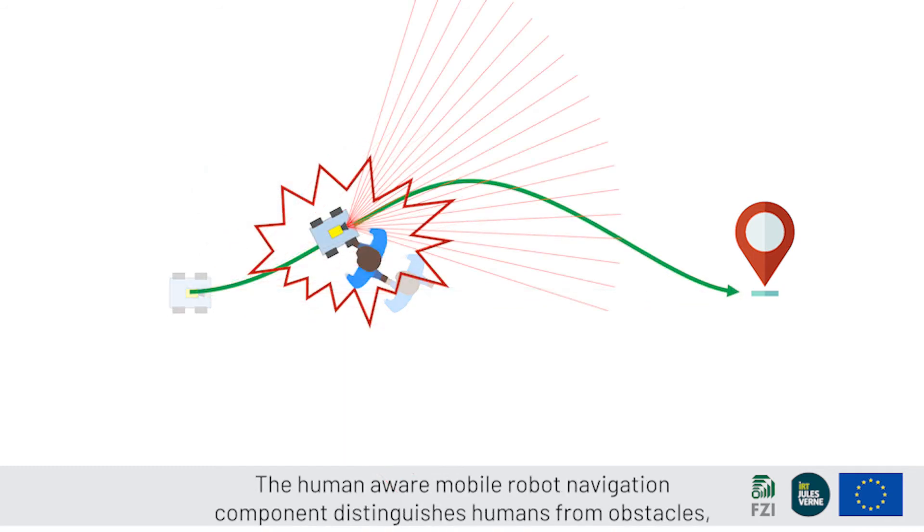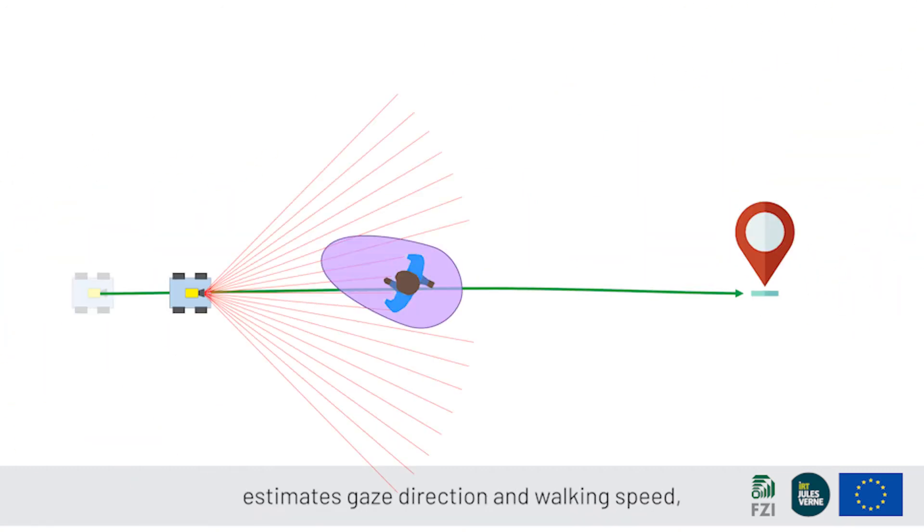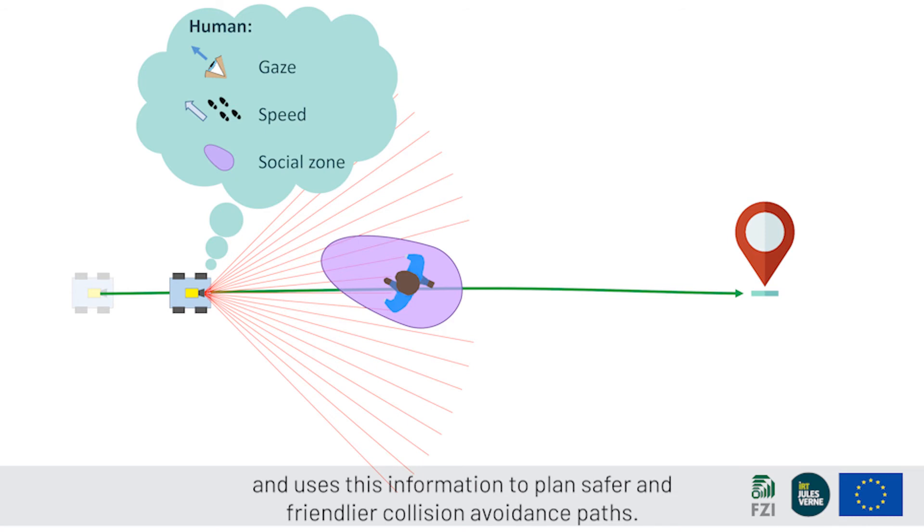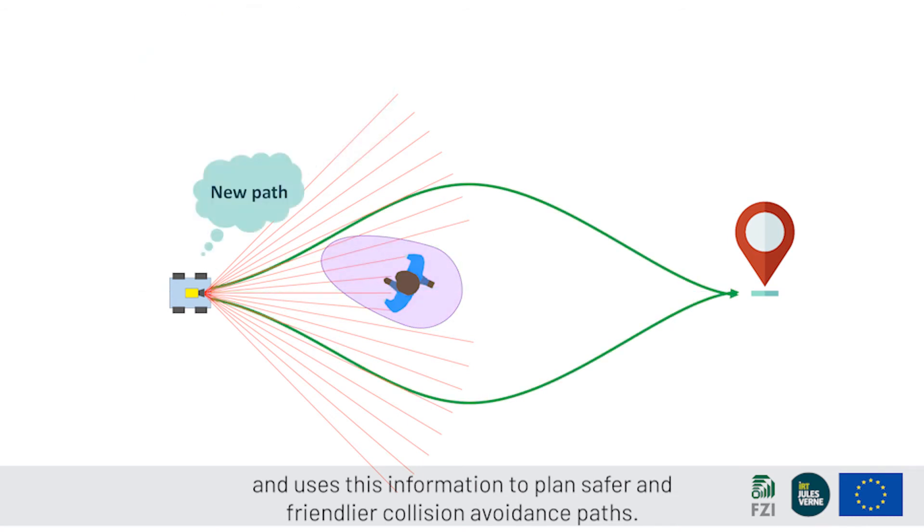The Human-Aware Mobile Robot Navigation Component distinguishes humans from obstacles, estimates gaze direction and walking speed, and uses this information to plan safer and friendlier collision avoidance paths.